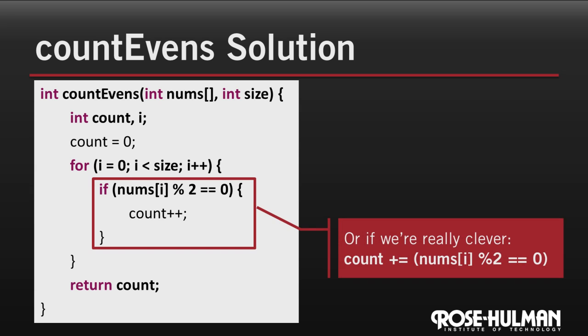Now, a clever C programmer might take advantage of the fact that there aren't actually any Boolean types in C, that they're just represented by integers. And so we can replace this whole if statement with an increment of count where the value that we increment by is actually a Boolean expression. So this nums of i mod two equal to zero will have the value one if nums of i is even. And it'll have the value of zero if that's odd. And that's a way to turn that if statement into a single expression.